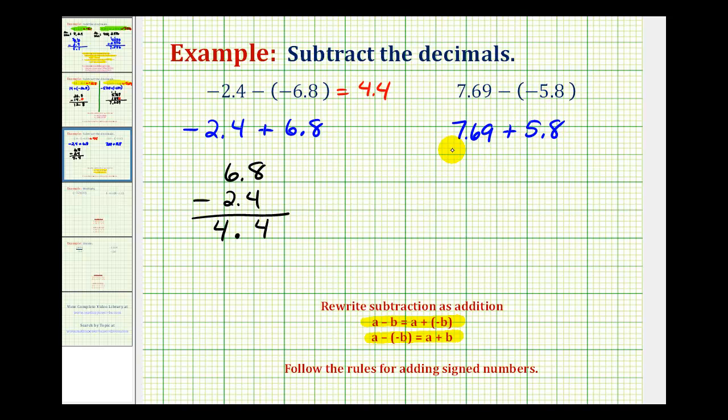And that's good news because this problem is review. We already know how to add two positive decimals. We just need to line up the place values and add. We might want to put a zero here in the hundredths place value. Bring the decimal down, and now we'll add.